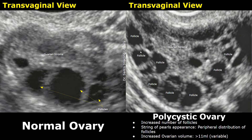Numerous follicles are present inside the ovary. These follicles will be seen around the wall of the ovary — they will have a peripheral distribution. This appearance is called string of pearls appearance. These small follicles or cysts are typically immature and fail to develop into mature follicles capable of ovulation. As a result, they accumulate in the ovaries, giving rise to the characteristic appearance seen on ultrasound.